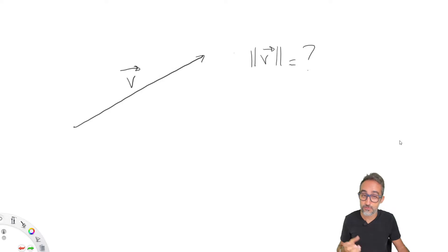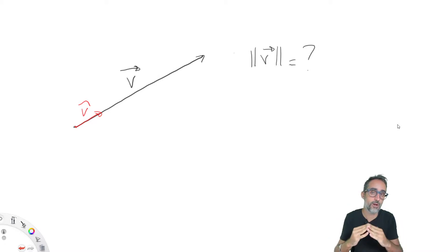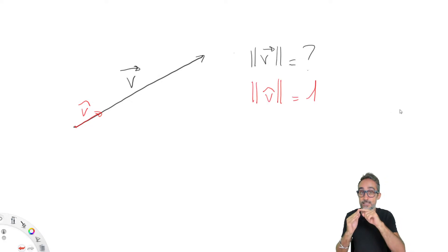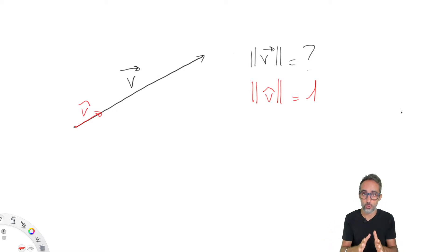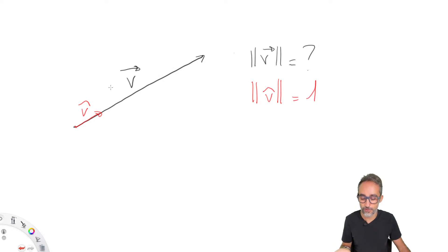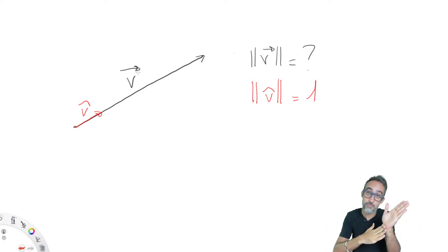What we want to do is from vector v, find a new vector that we're going to call v-hat. The hat is a very common notation for unit vectors. We want to find v-hat, which has the same orientation and the same direction as the original v vector, but the length is going to be one unit, in whichever system we're measuring. So we want to find coordinates of vector v-hat such that its length equals one.